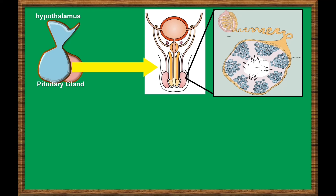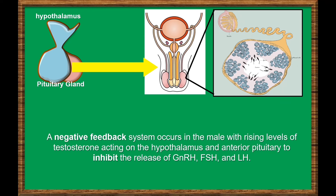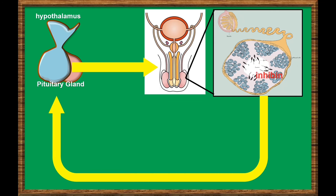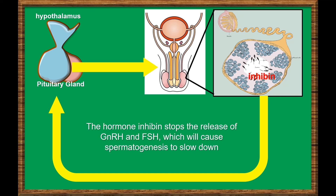A negative feedback system occurs in the male, with rising levels of testosterone acting on the hypothalamus and anterior pituitary to inhibit the release of gonadotropin-releasing hormone, follicle-stimulating hormone, and luteinizing hormone. The Sertoli cells produce the hormone inhibin, which is released into the blood when the sperm count is too high. This inhibits the release of GnRH and FSH, which will cause spermatogenesis to slow down. However, if the sperm count reaches 20 million per milliliter, the Sertoli cells stop the release of inhibin and the sperm count increases again.